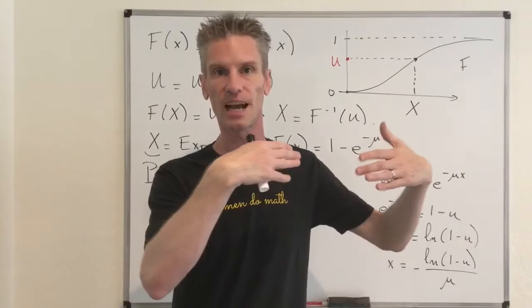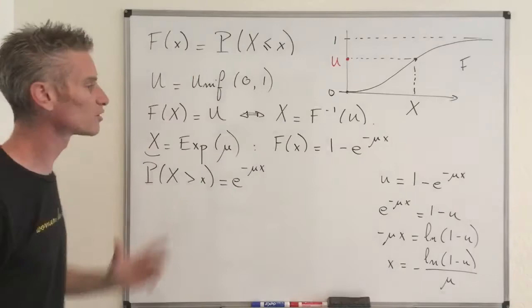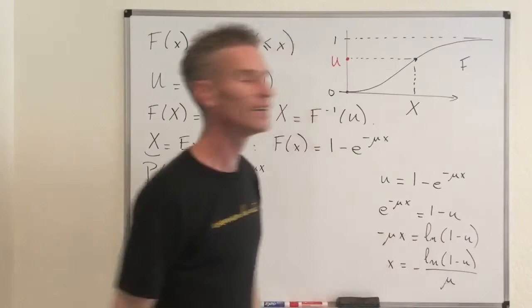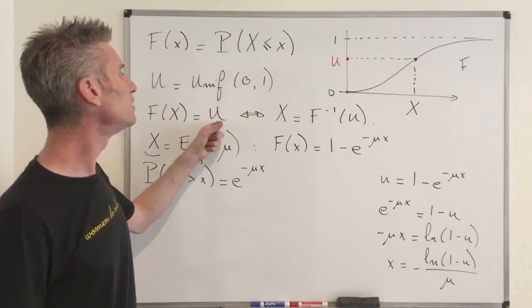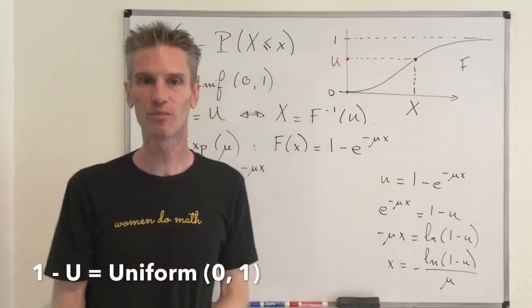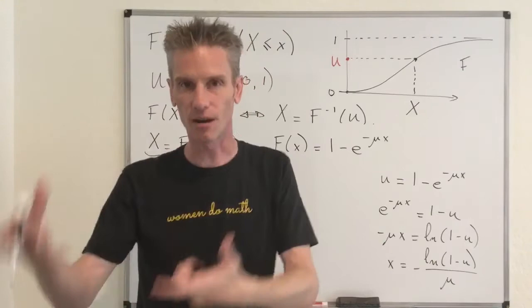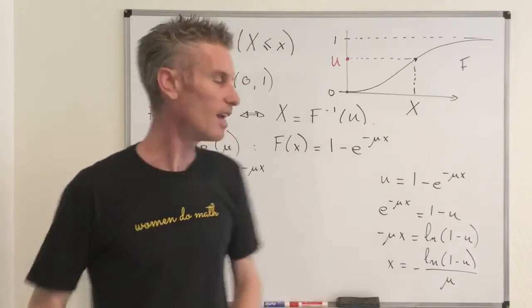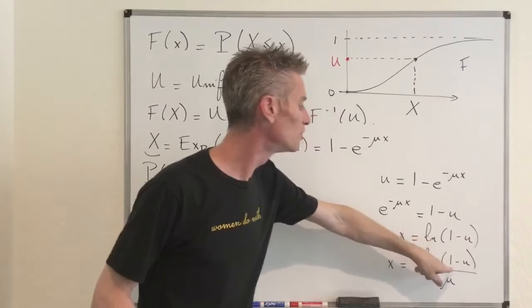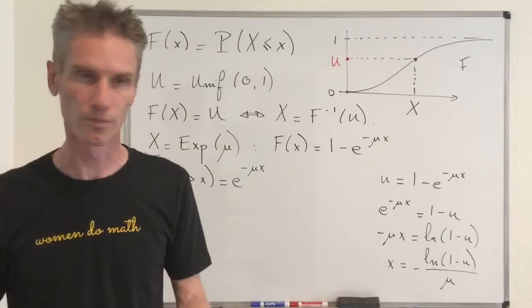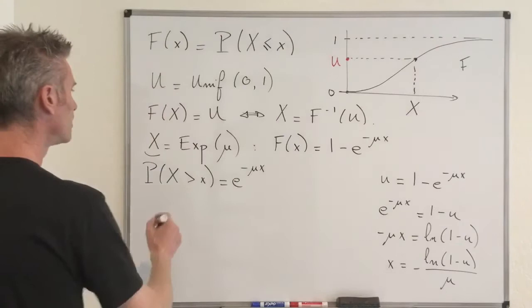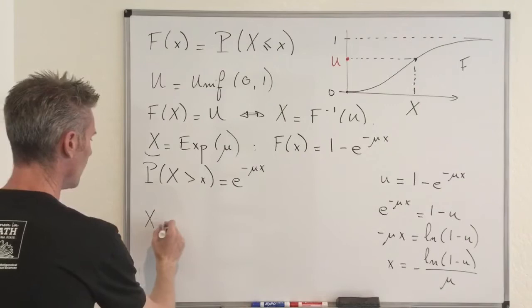One more trick: this doesn't work for any continuous random variable, but it's interesting to observe that if U is uniform in the interval zero-one, then one minus U is also uniform in the interval zero-one — by symmetry. So one minus U equals U in distribution. Therefore, to generate your exponential X, you don't even need the natural log of one minus U. You can just use the natural log of U. So the conclusion is: to simulate an exponential random variable, take minus the natural log of a uniform random variable in the interval zero-one and divide by mu.